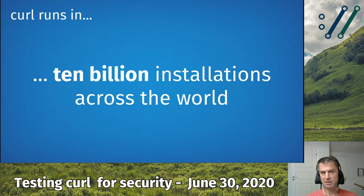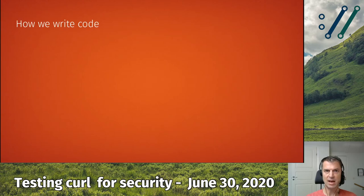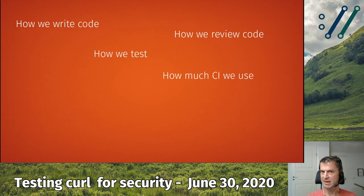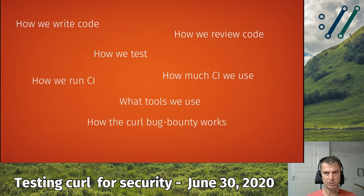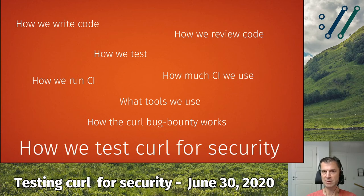The curl code runs in 10 billion installations worldwide. We'll cover how we write code, review code, test, and run the CI — how much there is, how we do it, what tools we use, and something about the bug bounty as well. In short: how we test curl for security.